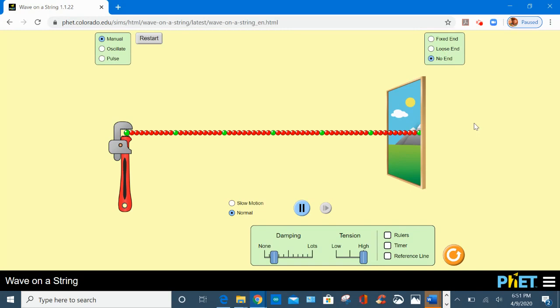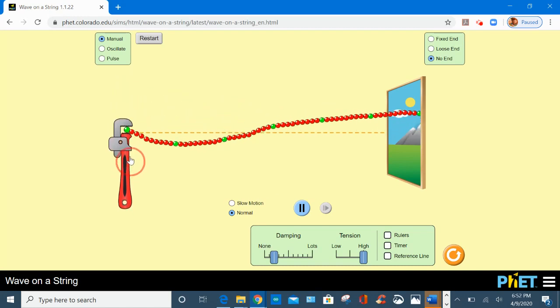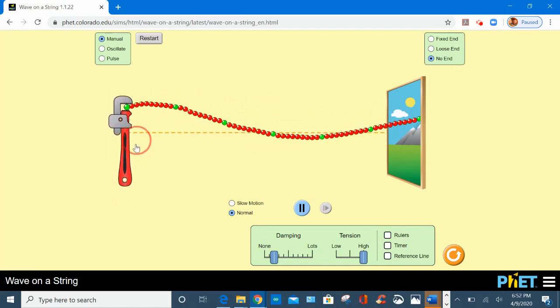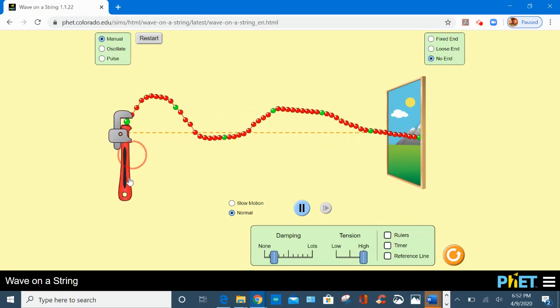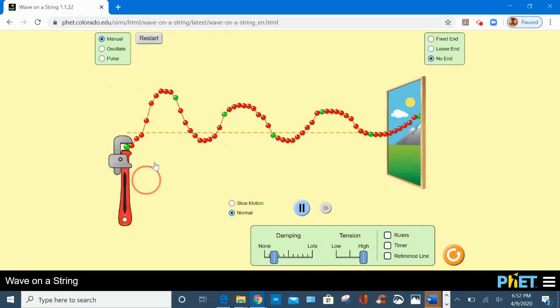The options to generate waves are the manual option by holding this wrench up and down with your keyboard or mouse and creating a wave with the desired speed.